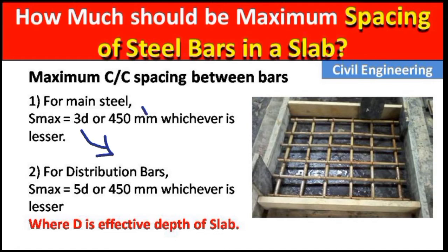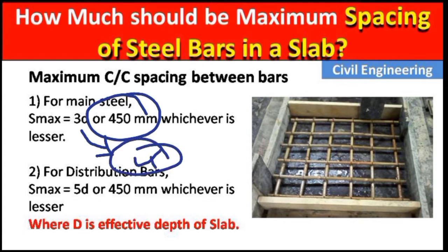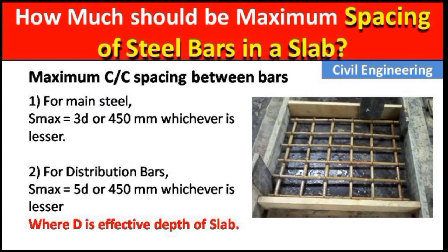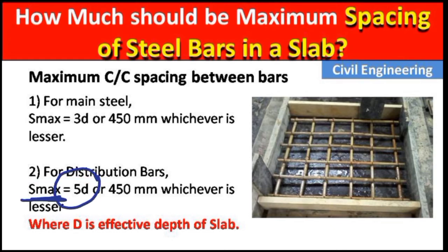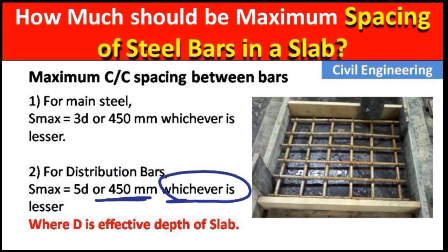We have to first calculate using the effective depth, then check which is lesser — 450 mm or the calculated value — and provide the lesser amount. Similarly, for distribution bars, the maximum spacing is 5d or 450 mm, whichever is lesser.